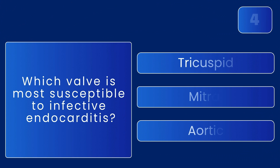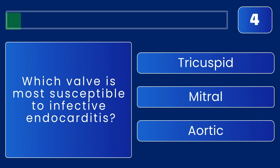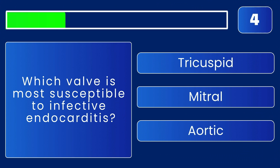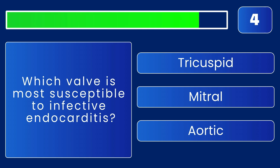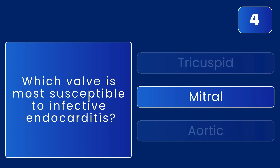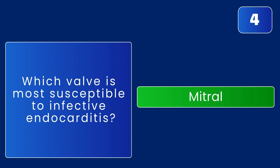Which valve is most susceptible to infective endocarditis? The answer is the mitral valve — it's the most frequent site of infection.